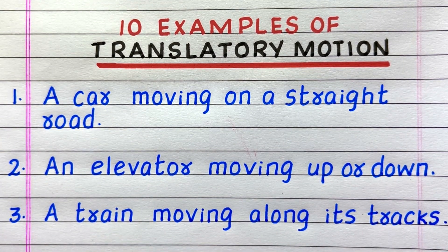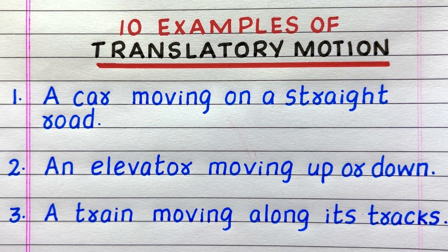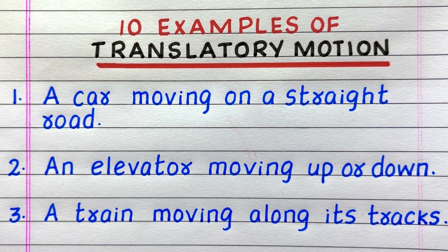First example of translatory motion is a car moving on a straight road. Second, an elevator moving up or down. Third, a train moving along its tracks.